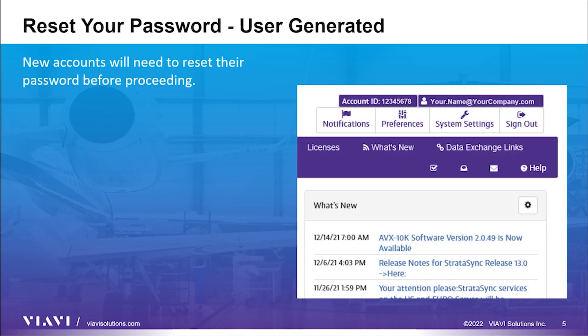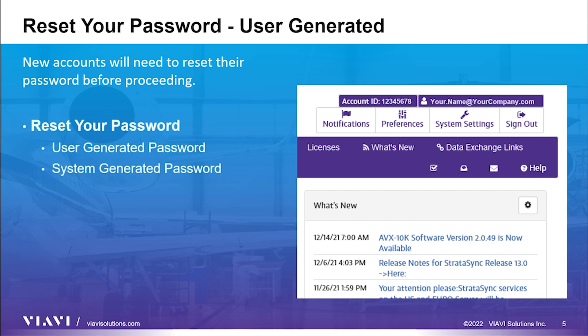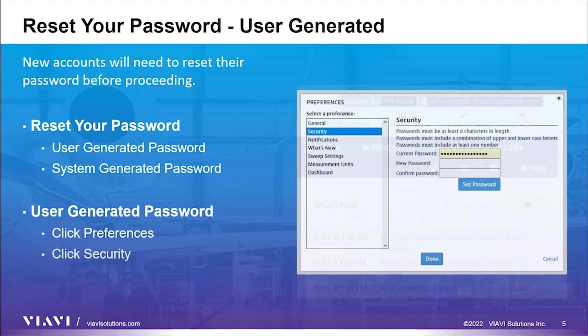Once the account is established and accessible, the next step is to reset your password and update your user information. There are two ways to reset your password. Users can enter their own password, or they can have the system generate a strong 8-character password. To enter your own password, click the Preferences icon in the top right corner of the webpage, choose the Security Preference, and enter the current password provided in your new account email. Then enter your new password and confirm. Click the Set Password button to set the password, and then Done to confirm the change.